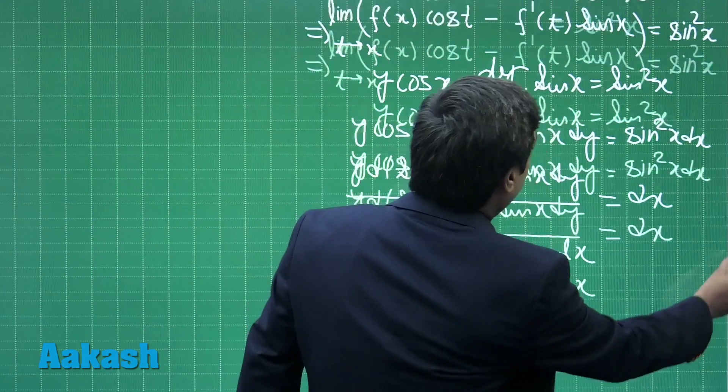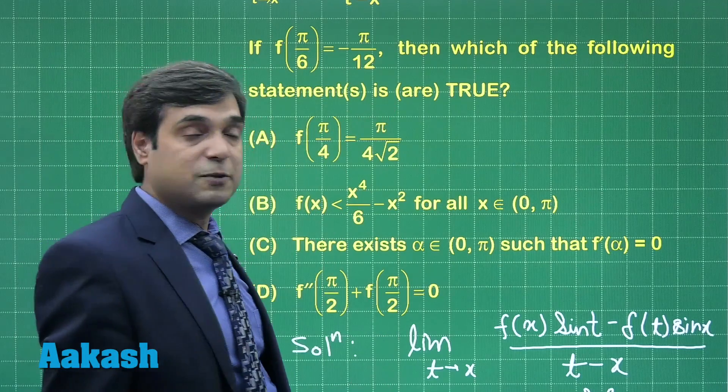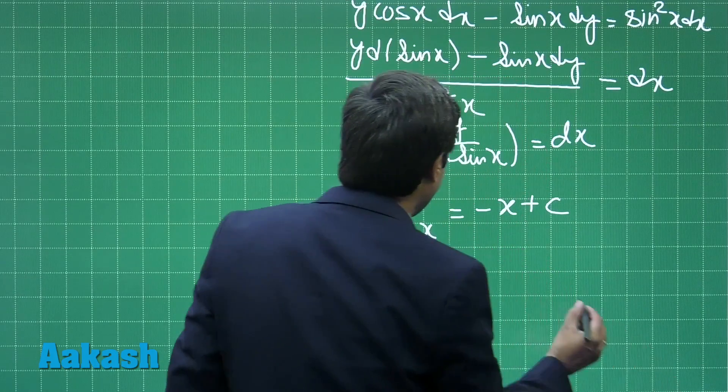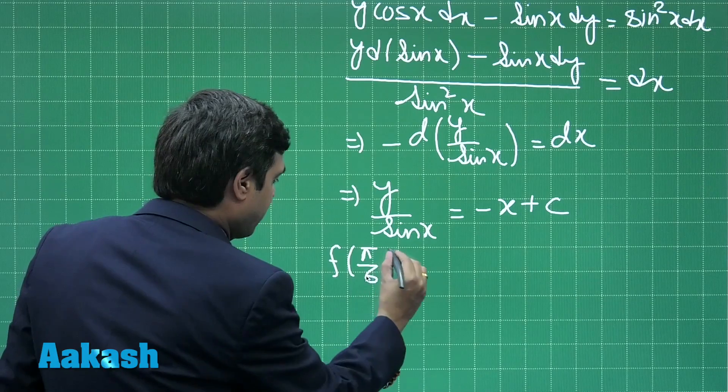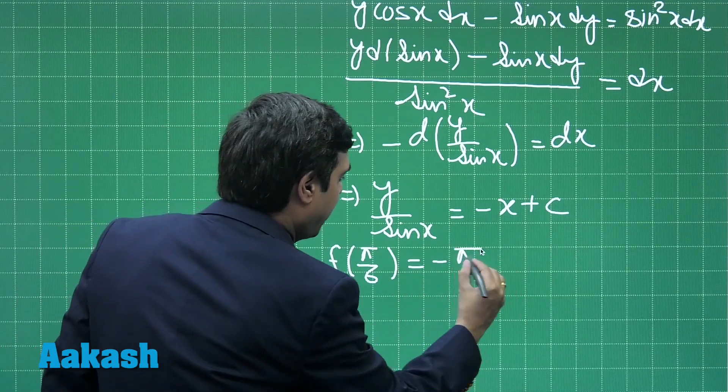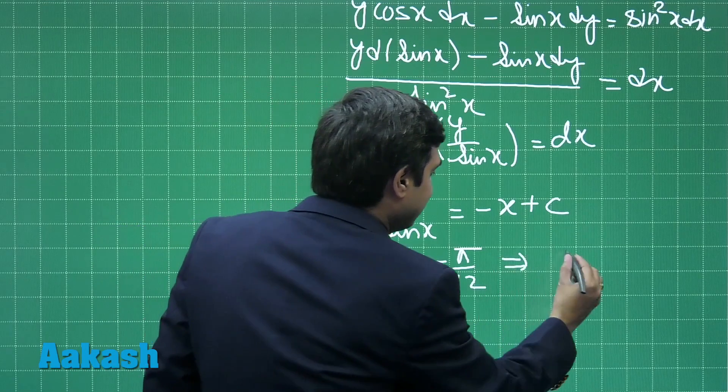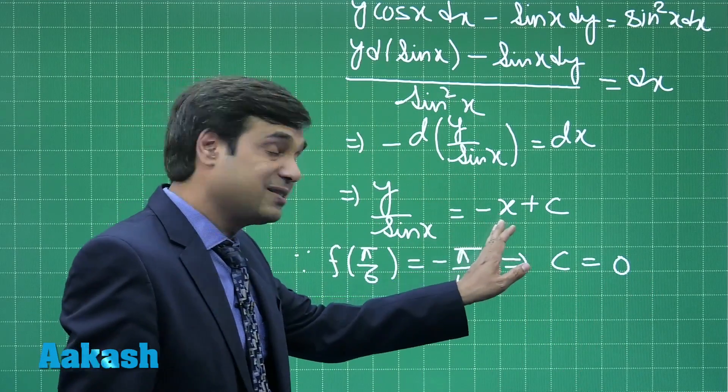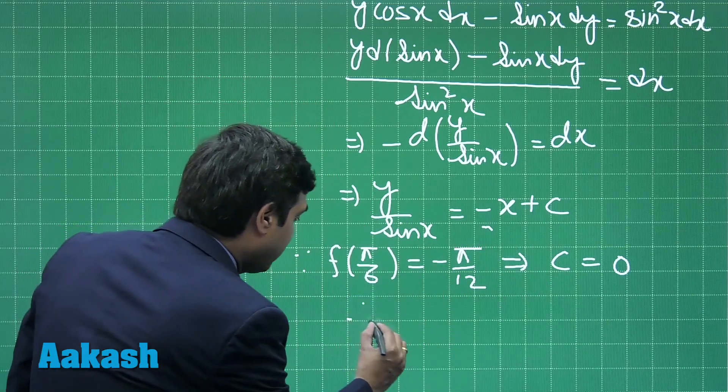One condition is given in this question as f(π/6) = -π/12. So substitute this value f(π/6) = -π/12. This gives us c = 0. When we put x = π/6, the terms cancel out. So c = 0.